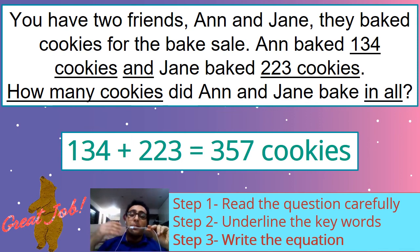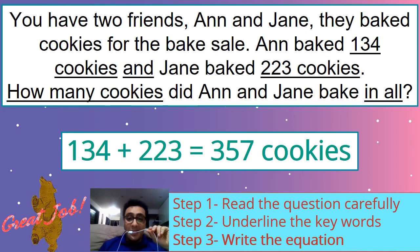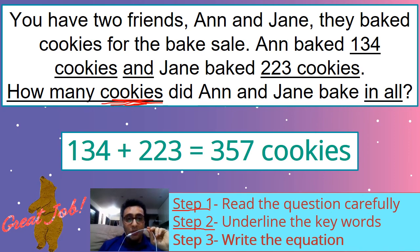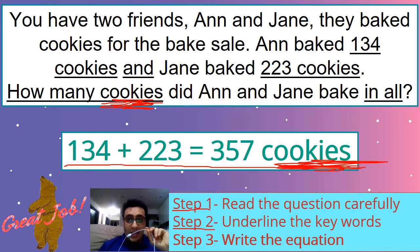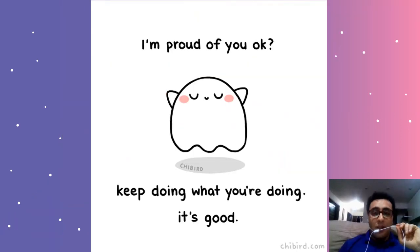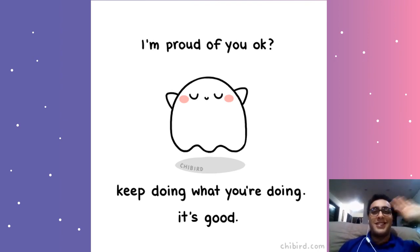So when you want to do an addition word problem, step one, read the question carefully. Read the story. Step two, underline the key words, especially, how many? Blah, blah, blah. You have to underline this. Very important. Step three, write the equation. This is the equation. And write the full answer. Don't forget this part. Okay? It's very important. So I am proud of you. Okay? Keep doing what you're doing. It's good. Good job. Until next time. Teacher Jonas out. Bye-bye, everyone. See you.